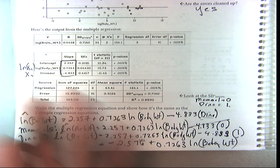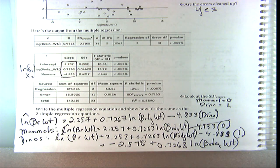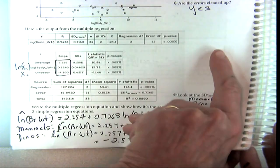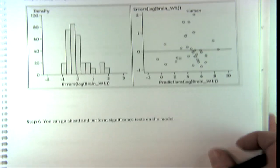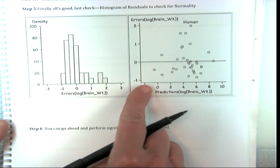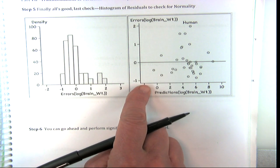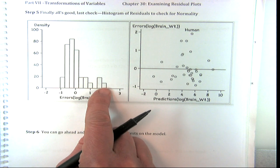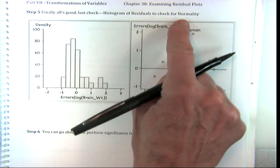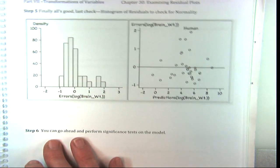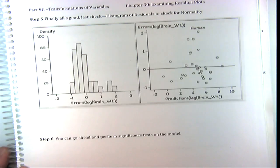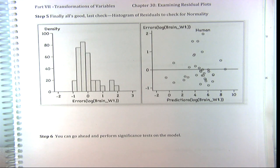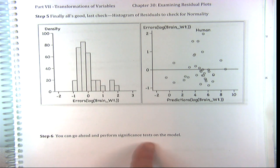Now that we've done this and everything looks good, what's the last thing we wanted to do? We want to check the normality of these errors. They look good. The simplest way is to draw a histogram — they look pretty good. That's our last check. That means our assumptions are all met — everything looks great, and we can proceed to do inference.